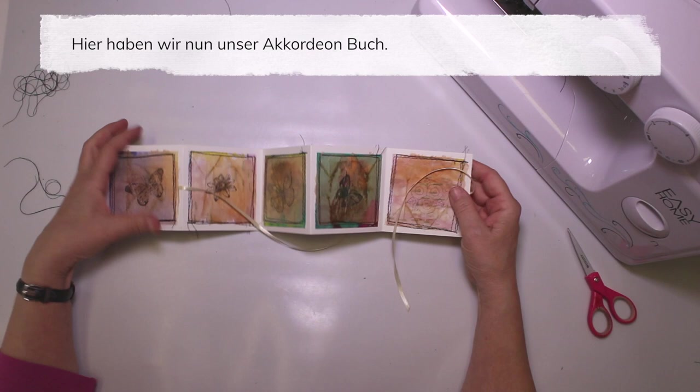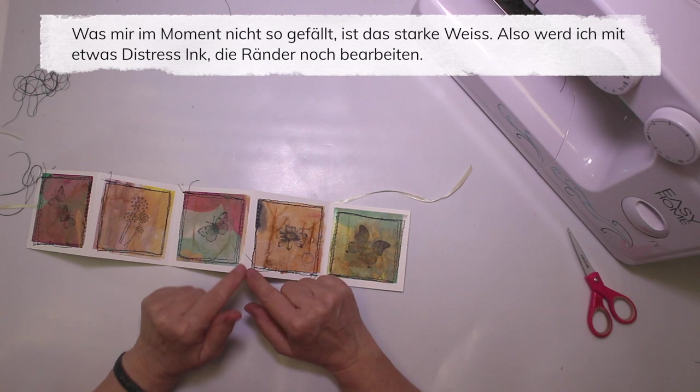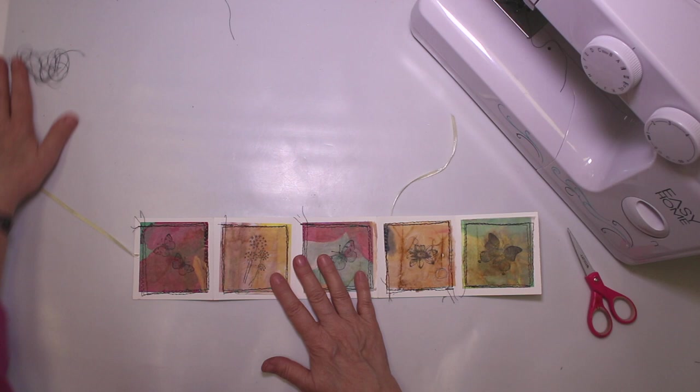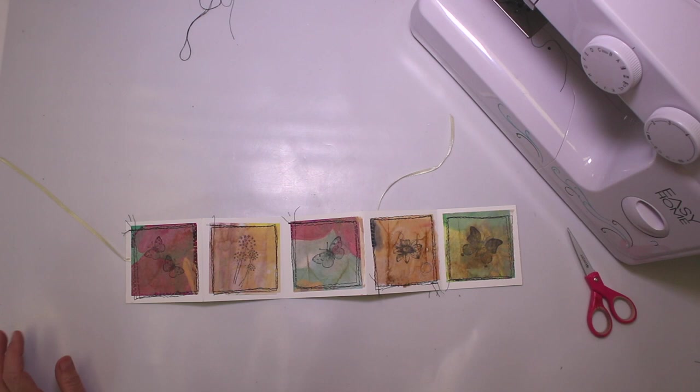Okay, here we are with our little accordion book. What I don't like at the moment is that it's stark white against the papers and the tea bags. So I'm thinking I'm going to grab some distress ink and add a little bit of color right away.